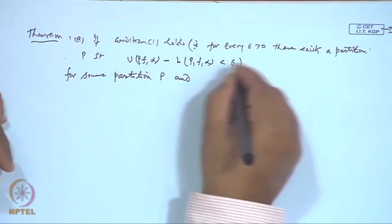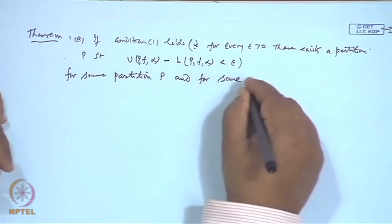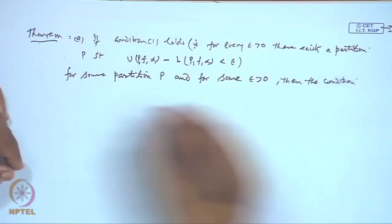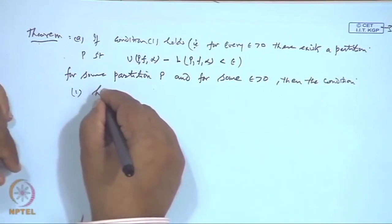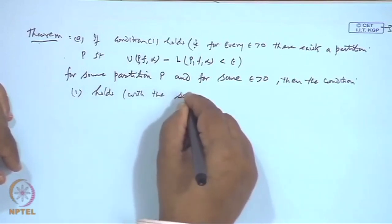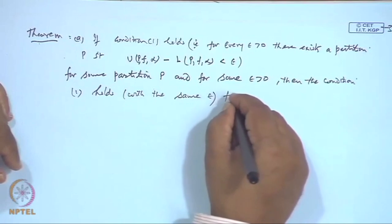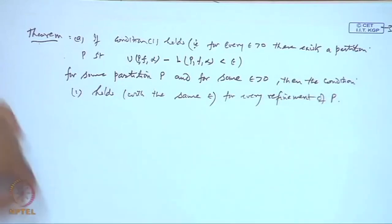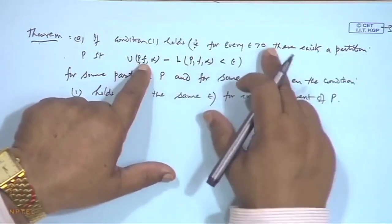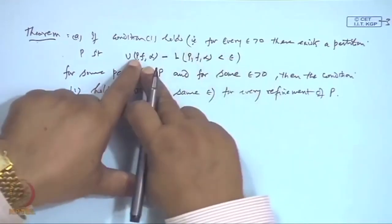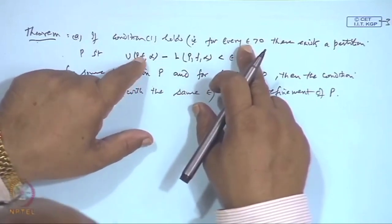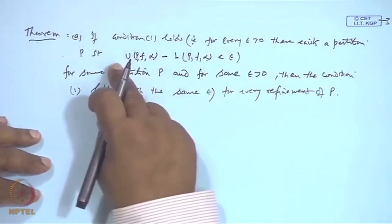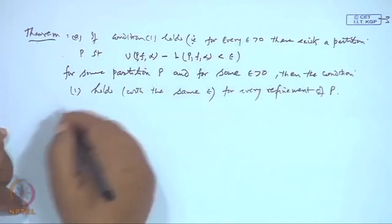Part one: if Condition 1 holds for some partition P and some ε > 0, then Condition 1 holds with the same ε for every refinement of P. The proof is simple: let P* be a refinement of P with the same ε. Since upper sum decreases and lower sum increases under refinement, U(P*,f,α) - L(P*,f,α) ≤ U(P,f,α) - L(P,f,α) < ε. This proves part one.